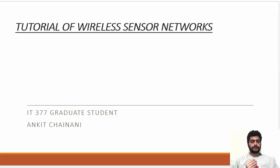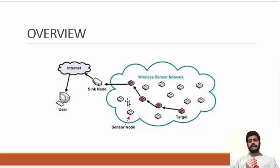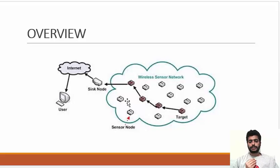Here you can see the overview of a wireless sensor network. This is the sink node, this is a user, and this is all connected to the internet. Basically you can see this is a base station and these are the sensor nodes, which are connected in a cluster or layered architecture. There are many kinds of sensor nodes — they are called WASP nodes in terms of telecommunication. You can see the arrow showing that information is transferring from node to node and directly to the sink node.